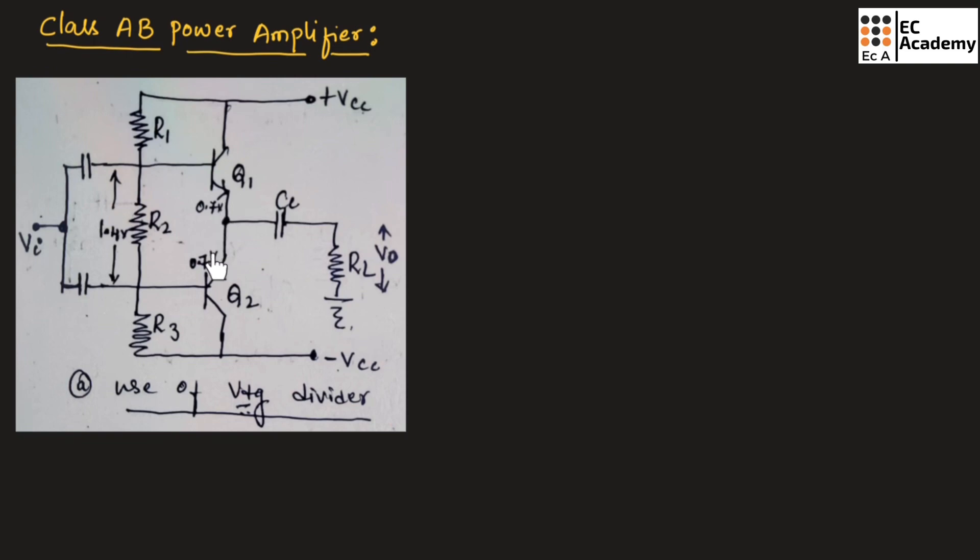The base emitter junction of both transistors are required to provide a fixed bias. For silicon type of transistor, a fixed bias of 0.7 volts and 0.7 volts, which is equal to 1.4 volts, is required for the operation.